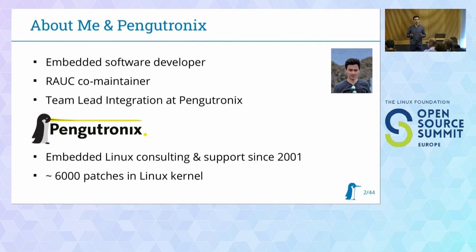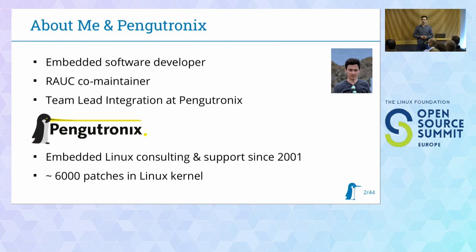A short note about me. My name is Enrico Jöns. I'm an embedded software architect and developer. I'm the co-maintainer of the update framework RAUC that I'm going to talk about today, and I work as an integrator and system engineer at Pengutronics. Pengutronics is a company providing embedded Linux consulting and support for customers from industry, automotive, or wherever. We work very closely with mainline projects and the community, and have about 6,000 patches in the Linux kernel.